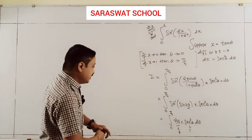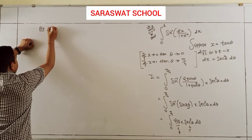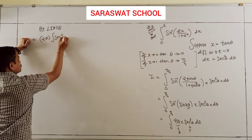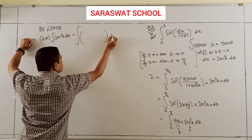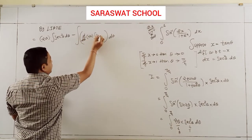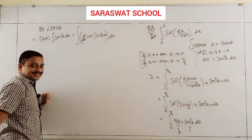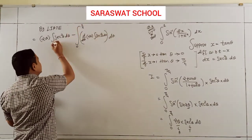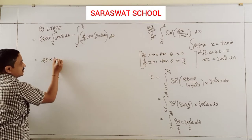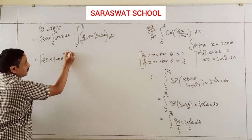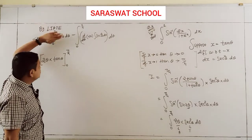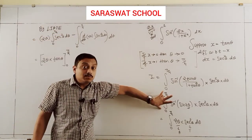Applying integration by parts: 2θ times tanθ evaluated from 0 to π/4, minus the integral of 2 times tanθ dθ from 0 to π/4. Applying the upper limit: 2(π/4) × tan(π/4) = (π/2)(1) = π/2. Putting 0 gives 0.